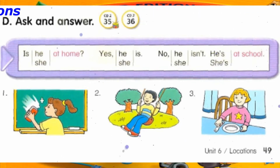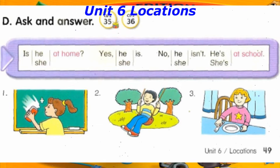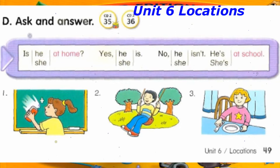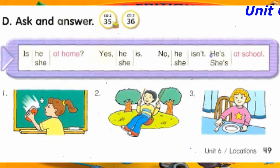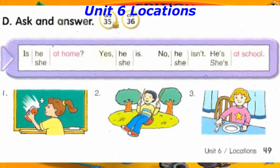Number 2: Is he at the park? Yes, he is. Is she at home? Yes, she is.